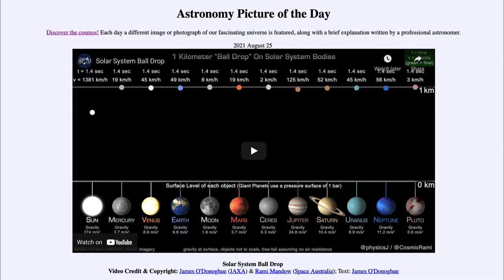Greetings, and welcome to the introduction to astronomy. One of the things that I like to do in each of my introductory astronomy classes is to begin the class with the astronomy picture of the day from the NASA website at apod.nasa.gov/apod. And today's picture for August the 25th of 2021 is titled the Solar System Ball Drop.